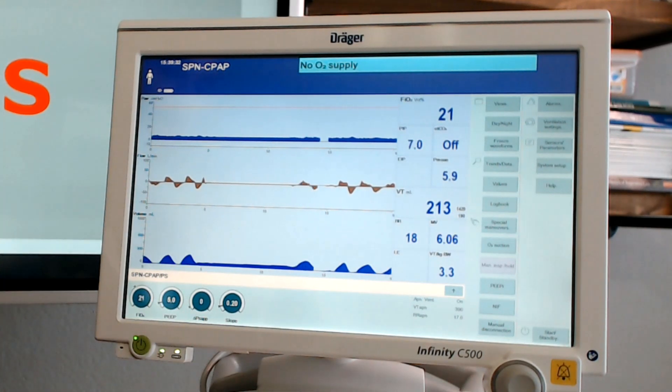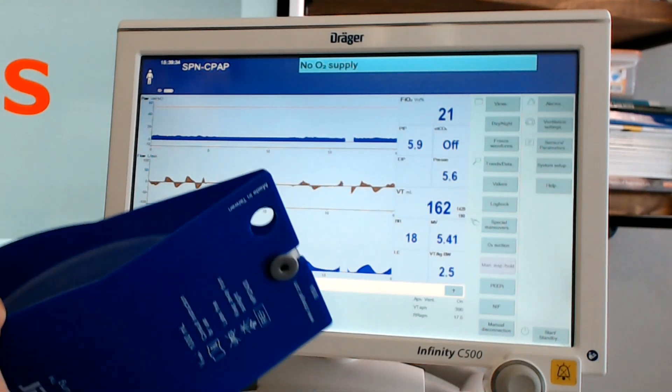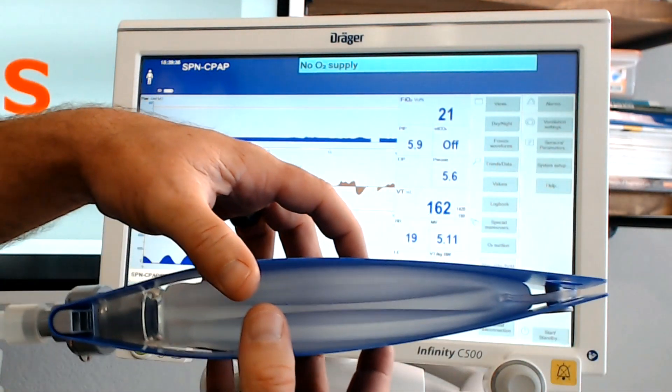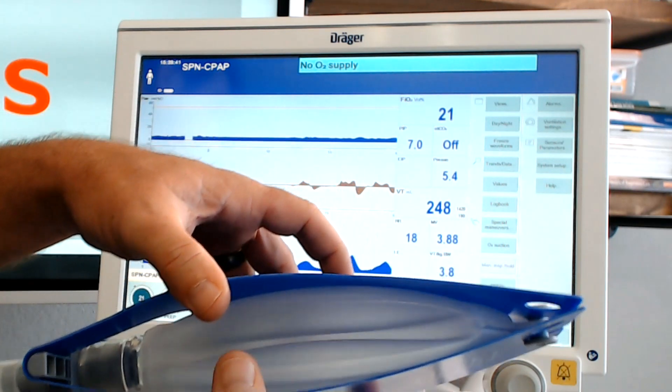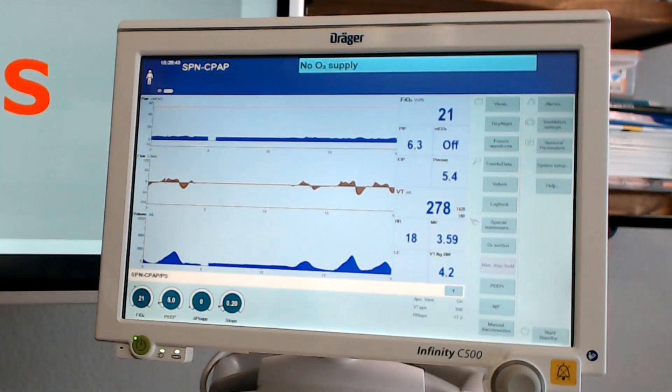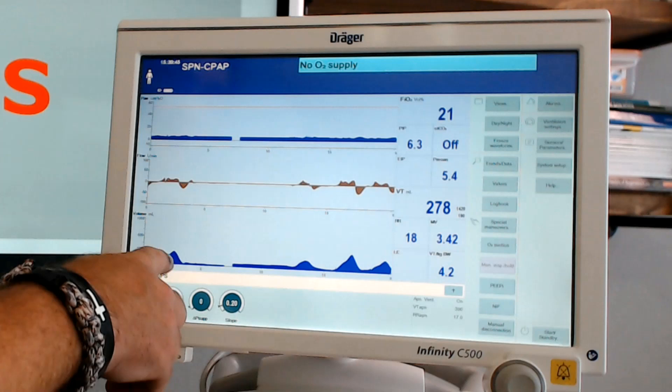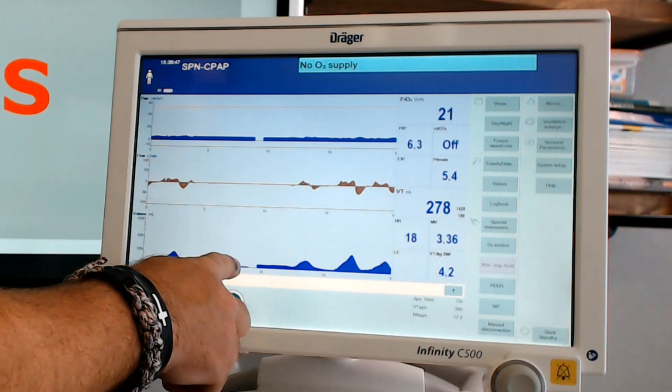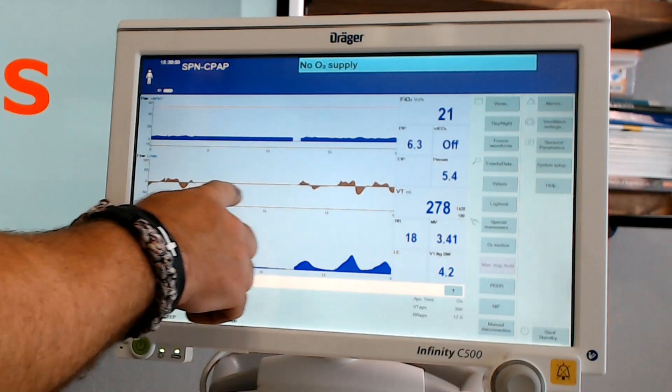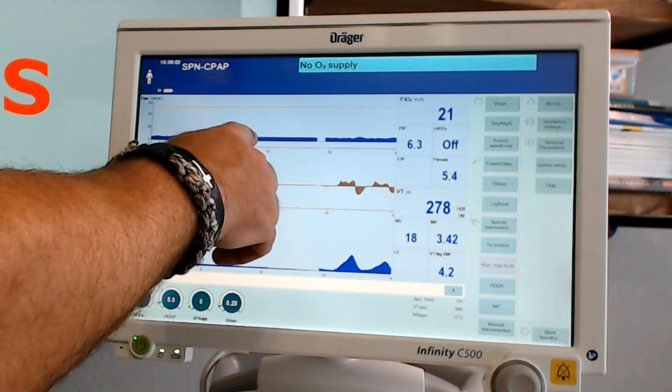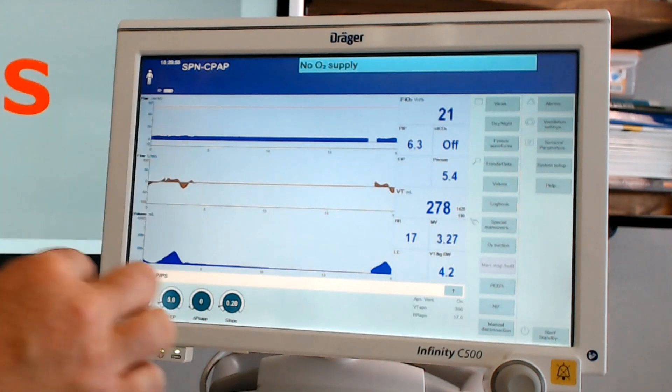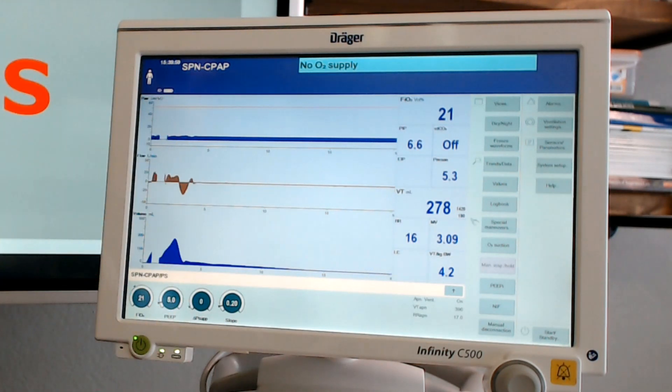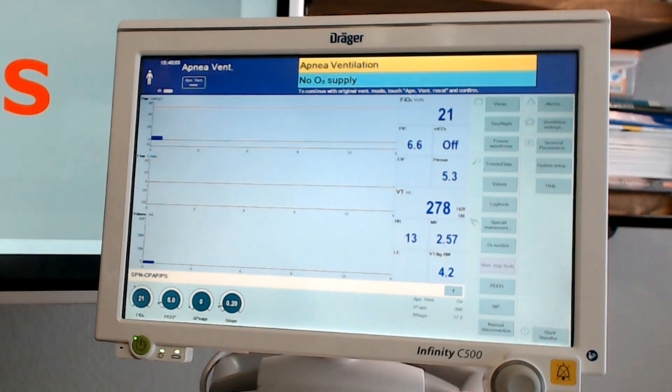Now the first thing I want you to notice is that if I don't pull on this test lung, all I'm doing is just pulling on this test lung, creating a negative pull which is simulating a breath. If I don't do that, look what happens. There's no flow. There's no volume. There's nothing because in CPAP, if the patient doesn't generate a volume, then there will be no volumes delivered.